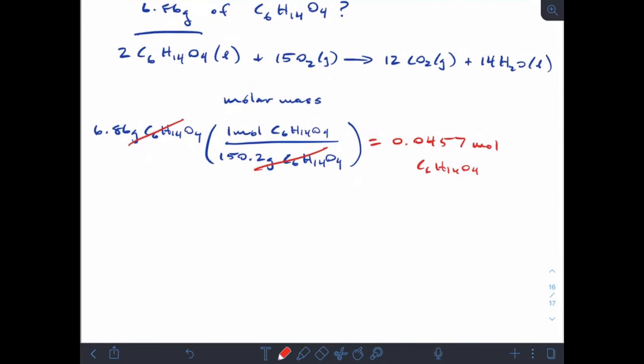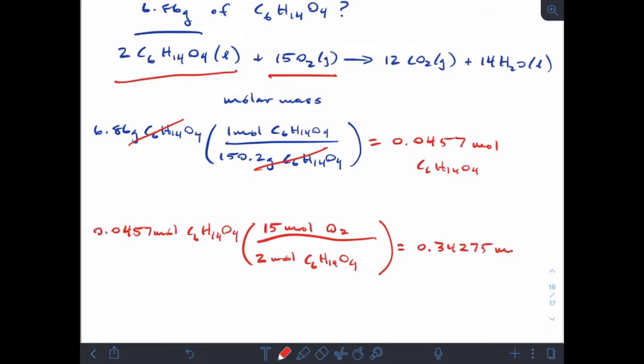All right? So now we're at moles of our compound. So once I'm at moles I can cross the mole bridge and get to the moles of oxygen. And we've got our C6H14O4 and we've got two of those and our O2 is what we're trying to find and we've got 15 of those. So two moles C6H14O4 and we've got in our equation 15 moles of O2. So we come out with 0.34275 moles of O2.